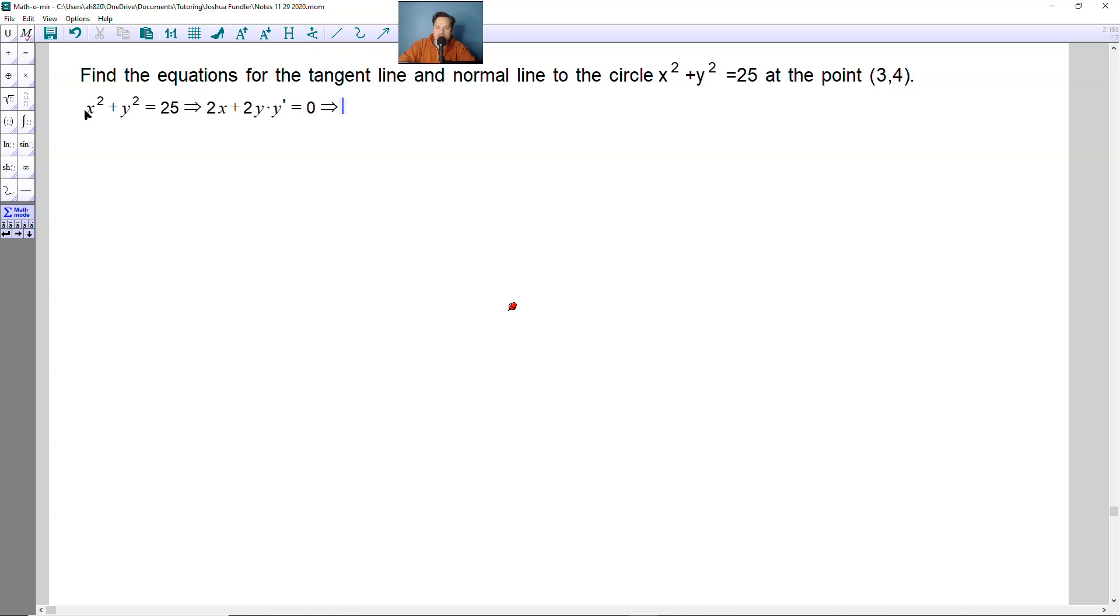Continuing here now, using 2x plus 2y times y prime equaling 0, just divide 2 from every term. That will give you x plus y times y prime is equal to 0. Then subtract x, so you get that y times y prime is equal to negative x.